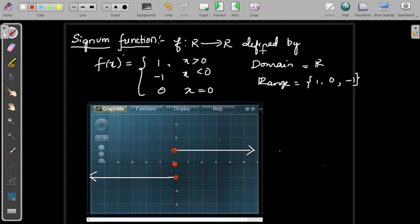A function f from R to R defined by f(x) equal to 1 for x greater than 0, f(x) equal to minus 1 for x less than 0, and 0 for x equal to 0. Such a function is called signum function.